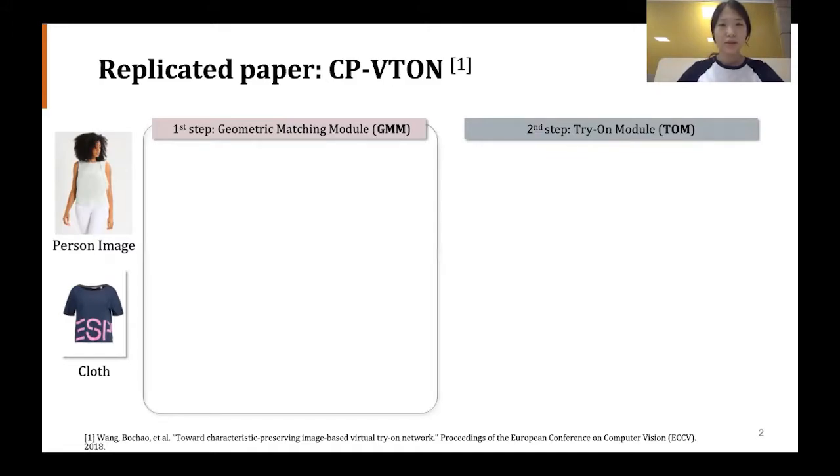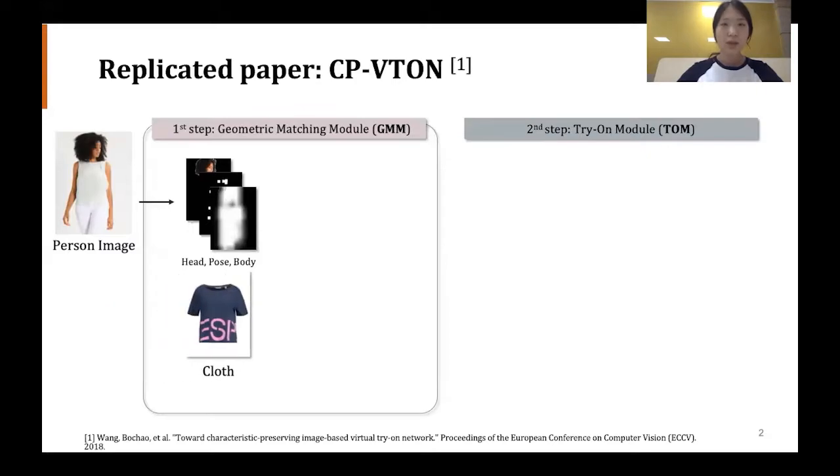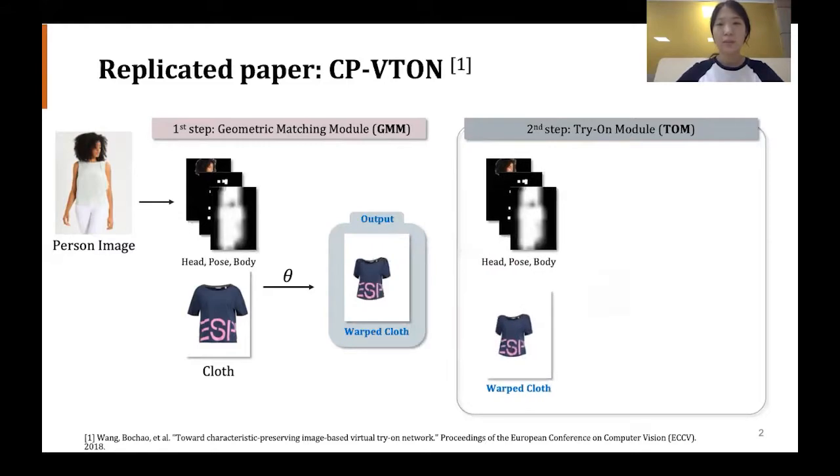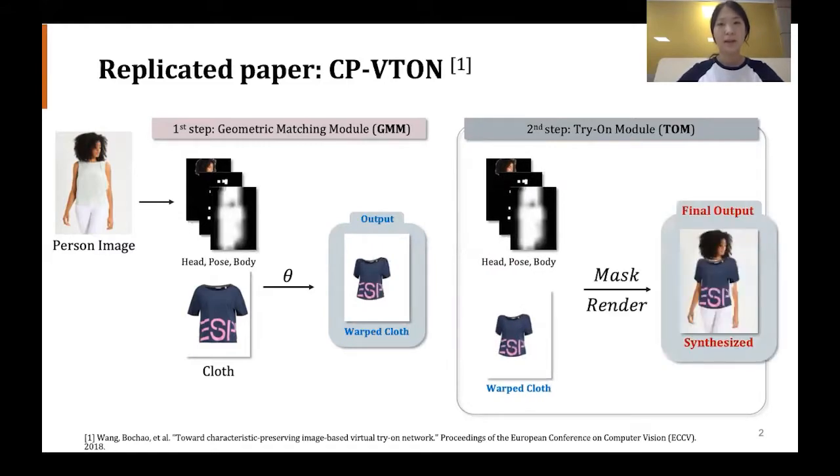Now let's look at the GMM model first. The person information data are extracted from the person image. And then with the cloth image, GMM model learns or predicts how much the clothes should be warped to make a warped cloth image. And with this image and the person information, the try-on model makes the final cloth-wearing image.